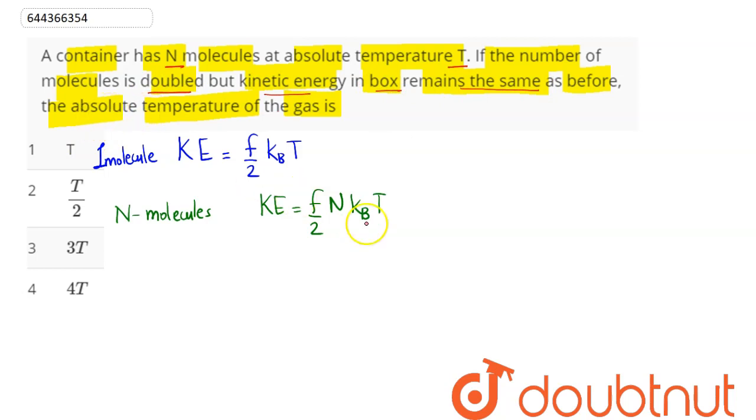So here kinetic energy remains same, that is constant. Therefore k_B is constant, degrees of freedom will remain constant, 2 is constant. So number of molecules into temperature will remain to be a constant.